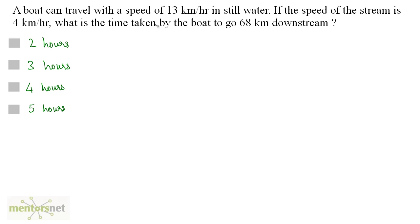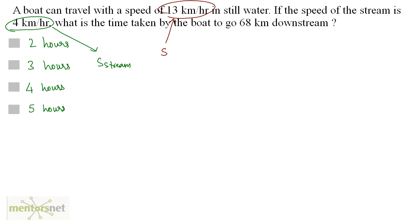The boat can travel with a speed of 13 kilometers per hour in still water, so this is the speed of the boat in still water — that's S. The speed of the stream is 4 kilometers per hour. With these two data points, we can calculate the downstream speed, which equals the speed of the boat in still water plus the speed of the stream: 13 plus 4, which is 17 kilometers per hour.